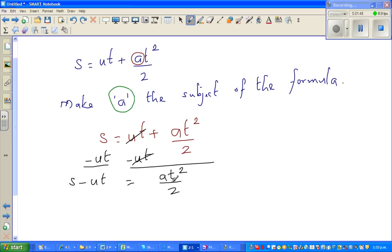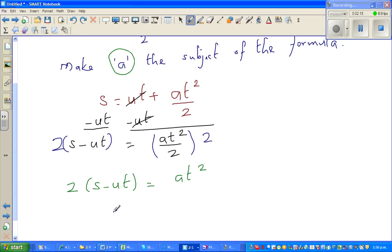The next step: I'm thinking, can I get rid of this 2? This is divided by 2, so to get rid of it I'm going to multiply by 2. If you multiply this side by 2, you also multiply this side by 2. This becomes 2 times s minus ut, and this and this cancel, leaving at squared.